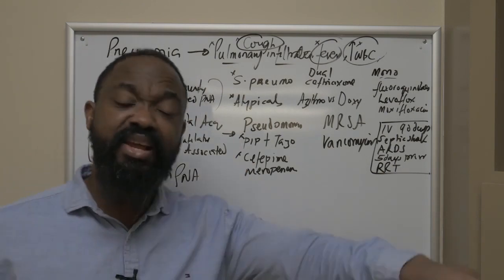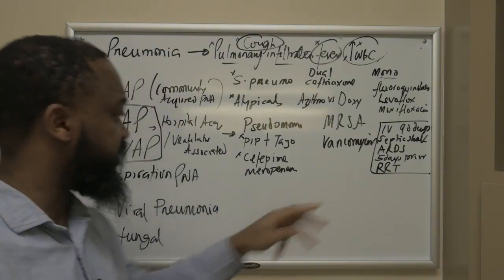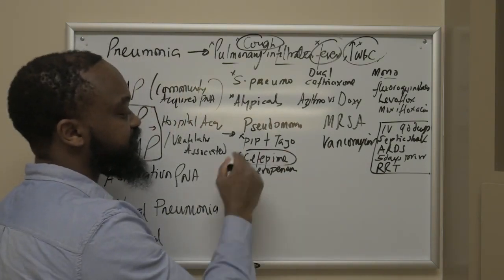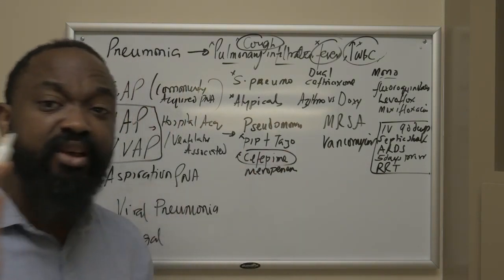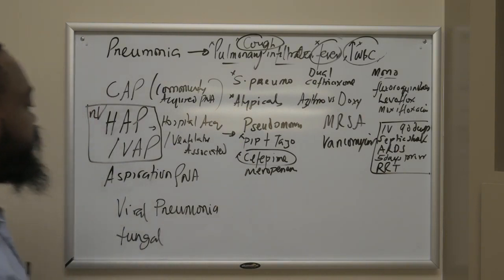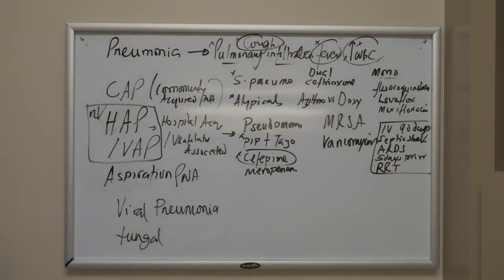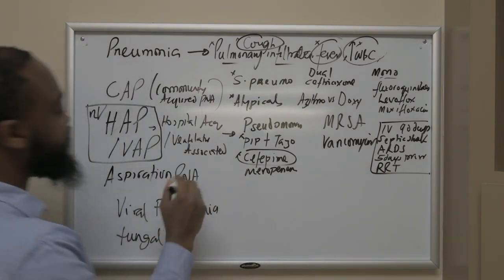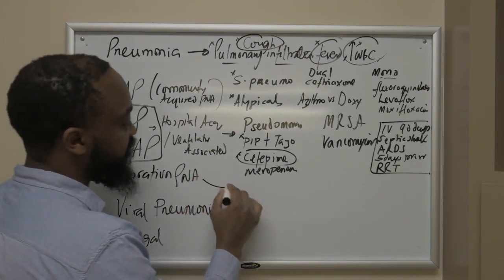An important distinction: piperacillin-tazobactam has better anaerobic coverage than cefepime. So if you're ever thinking about anaerobic coverage, Pip-tazo is a better choice. Cefepime doesn't have sufficient anaerobic coverage, so you might have to add separate anaerobic coverage. Meropenem has excellent anaerobic coverage as well. That's the reason I'm bringing this up — because now we're going to aspiration pneumonia.